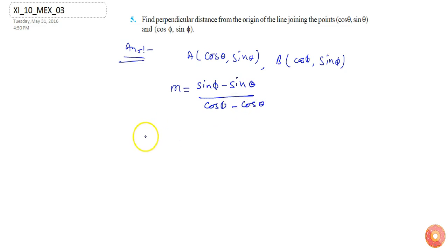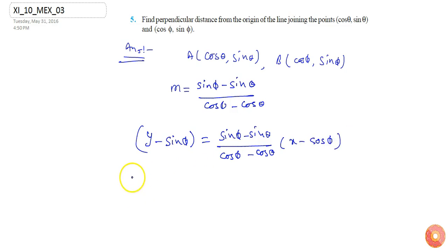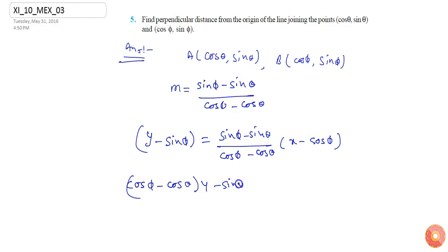So the equation of the line will be: y minus sine phi equals m, which is (sine phi minus sine theta) divided by (cos phi minus cos theta), times (x minus cos phi). Expanding, this gives (cos phi minus cos theta)(y minus sine theta)(sine phi) and cos phi terms.